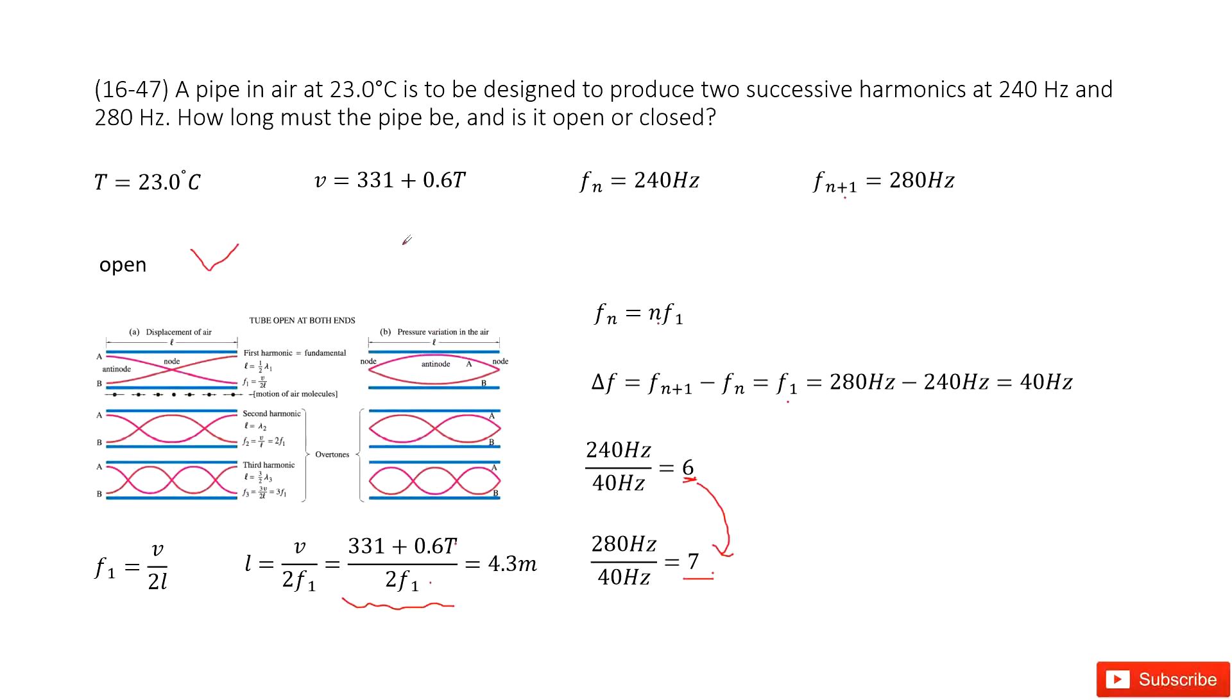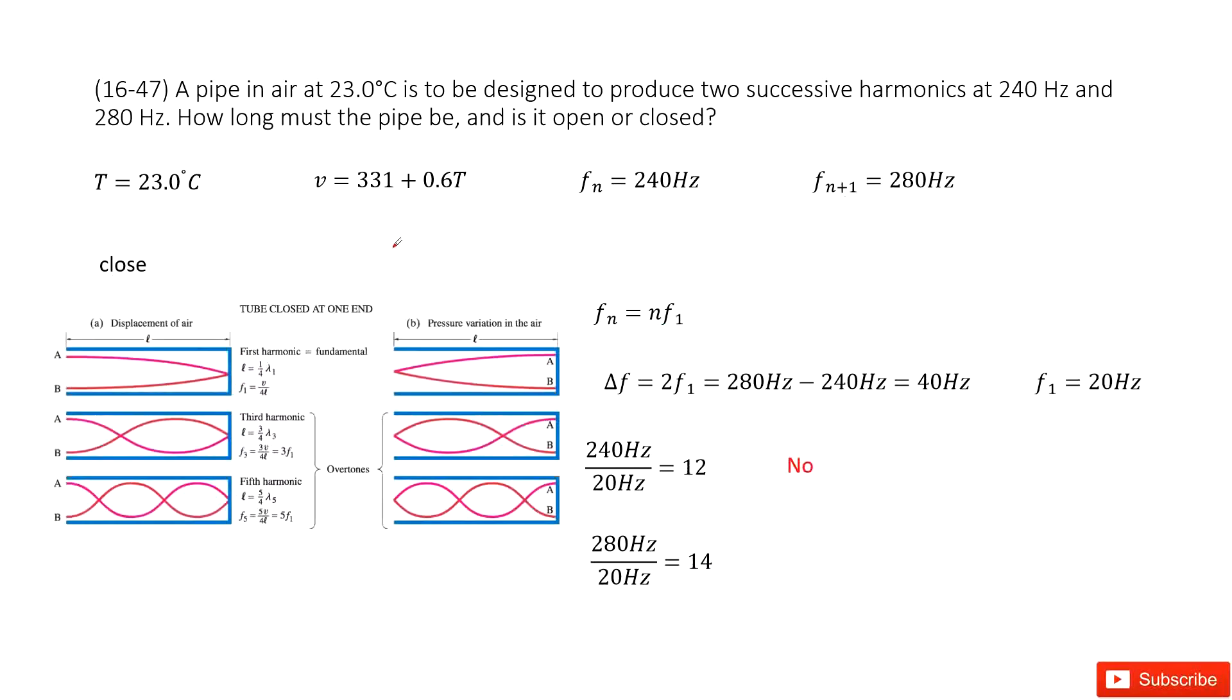Now let's consider if this is a closed pipe. For a closed pipe, we see this picture in our textbook. We still have fn equals n times f1.